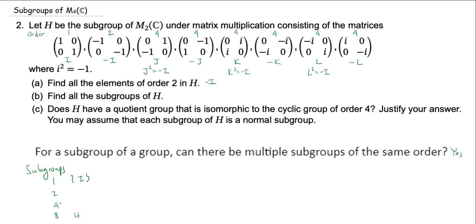If you have a subgroup of order 2, one element has to be the identity, and the other element must have order 2 — because the order of any element in a group divides the group order. Since we know H has order 8, every element's order divides 8. But if you're in a subgroup of order 2, the non-identity element would have to divide 2. There's only one element of order 2, which is negative I, so {I, -I} is the only subgroup of order 2.